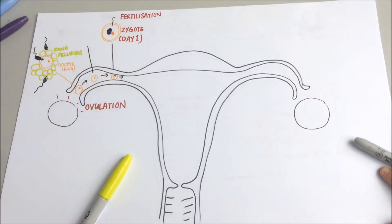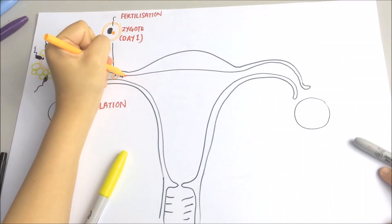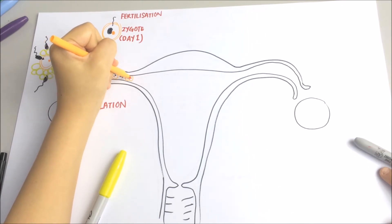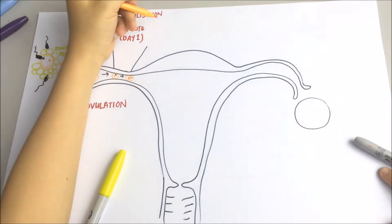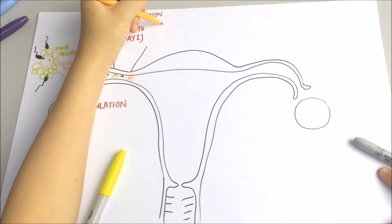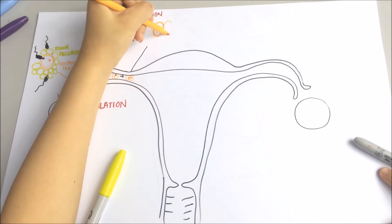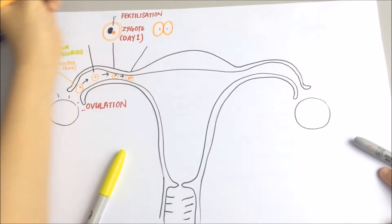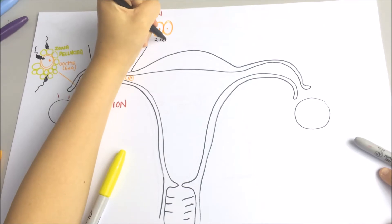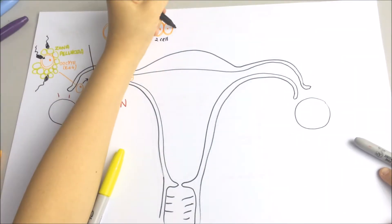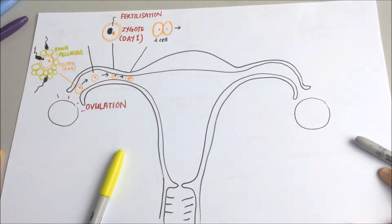Once this happens, the menstrual cycle stops and the nine-month gestation period starts — this period is known as pregnancy. The zygote will then slowly move towards the uterus with the help of the peristaltic contractions of the fallopian tube.